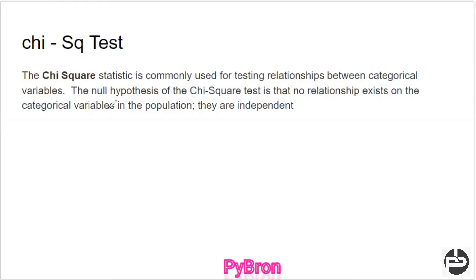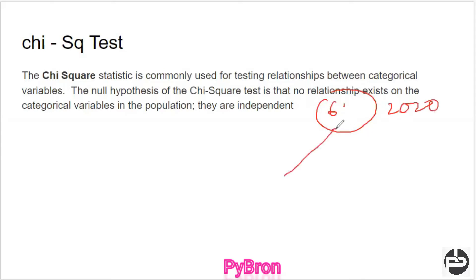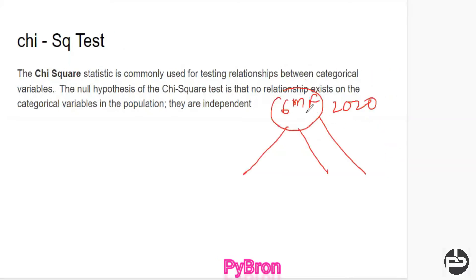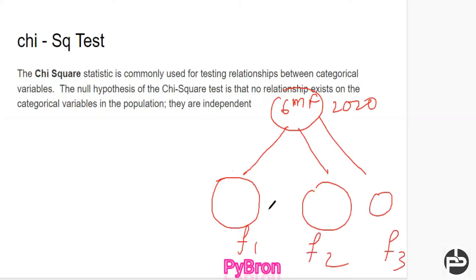Basically, Chi-Square testing is used whenever you are going to learn something new. So first I'm going to give you a story. I have a family of six members in the year 2020. After 10 years, this main family of six is going to distribute into three sub-families — family one, family two, and family three. Each family has three members.